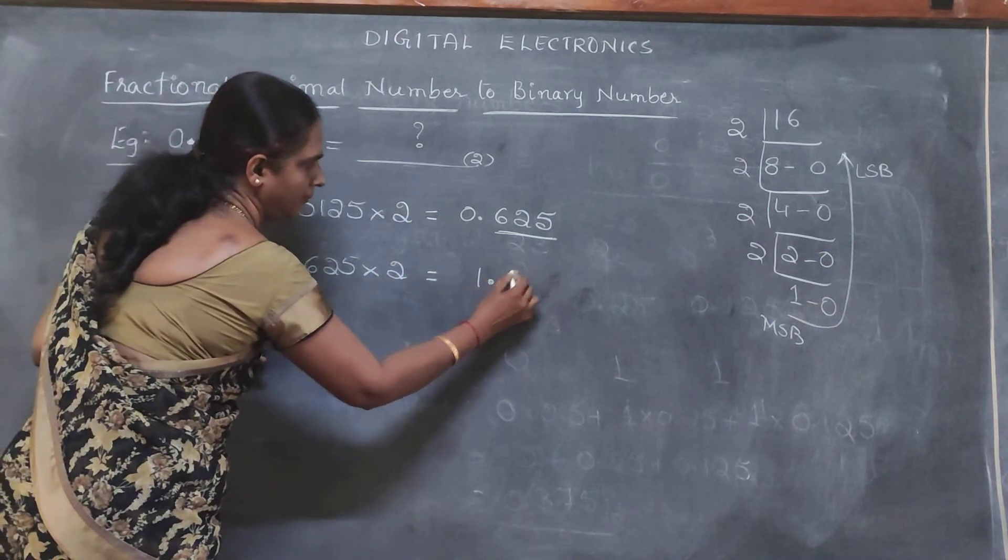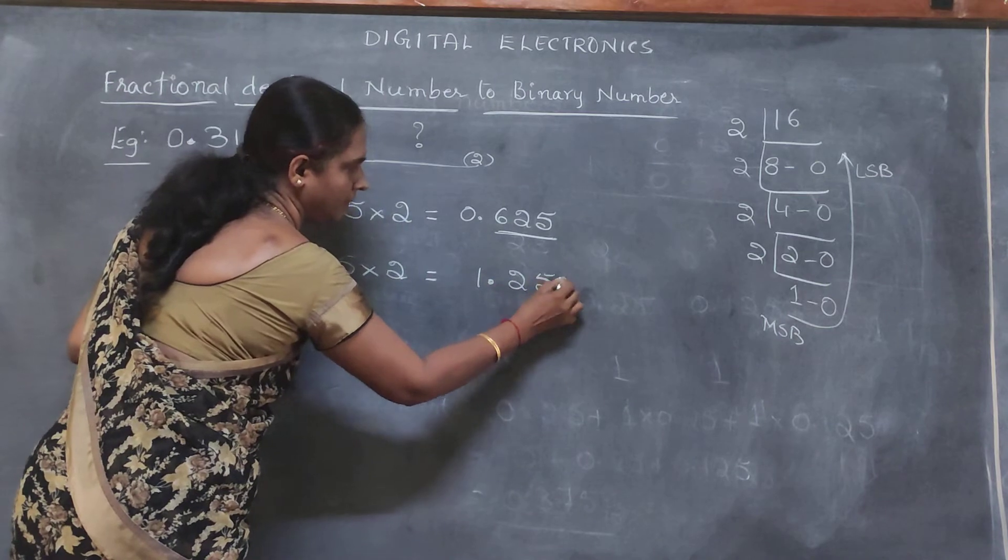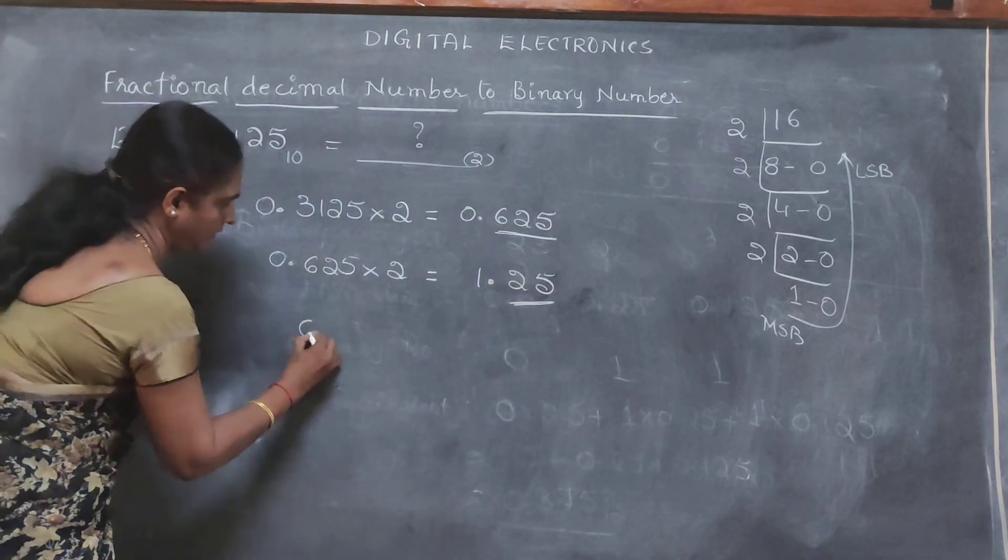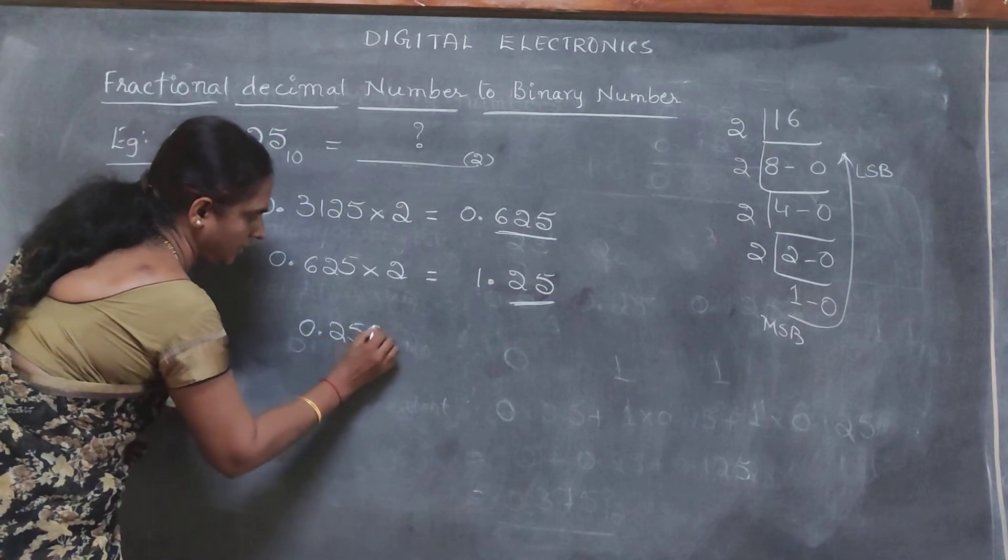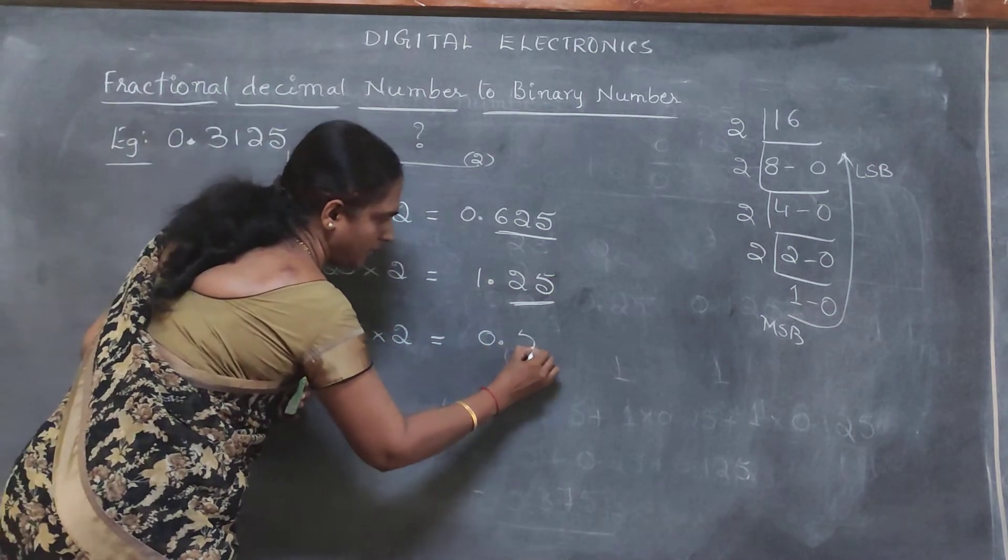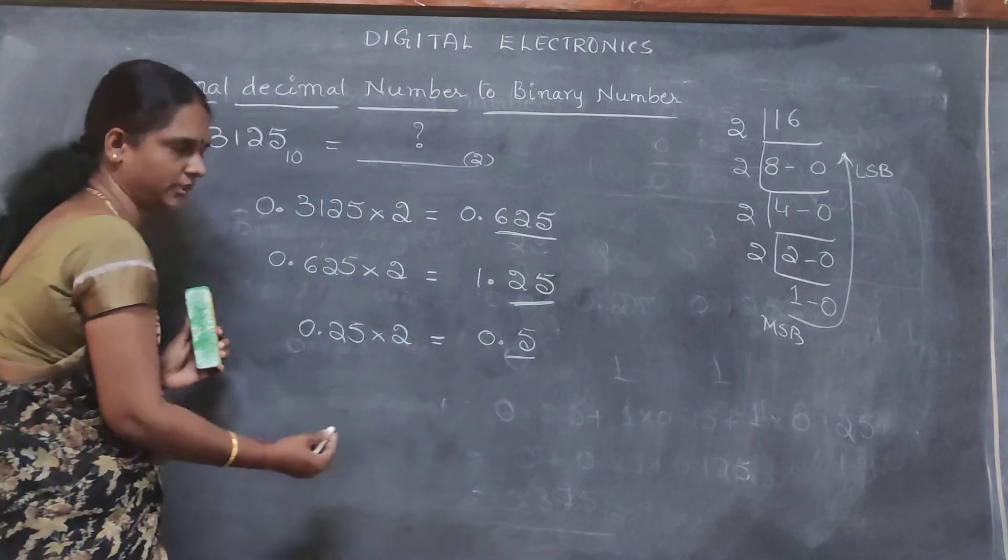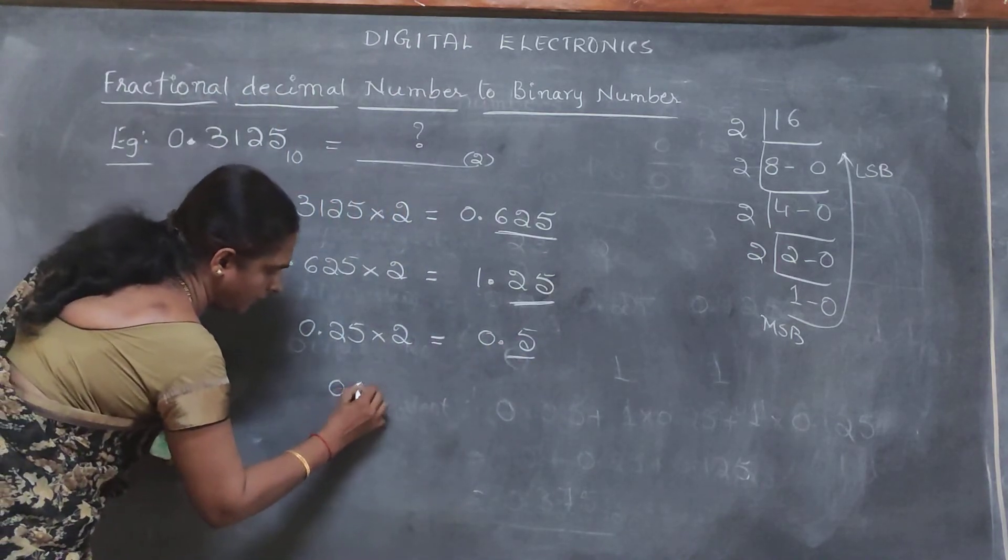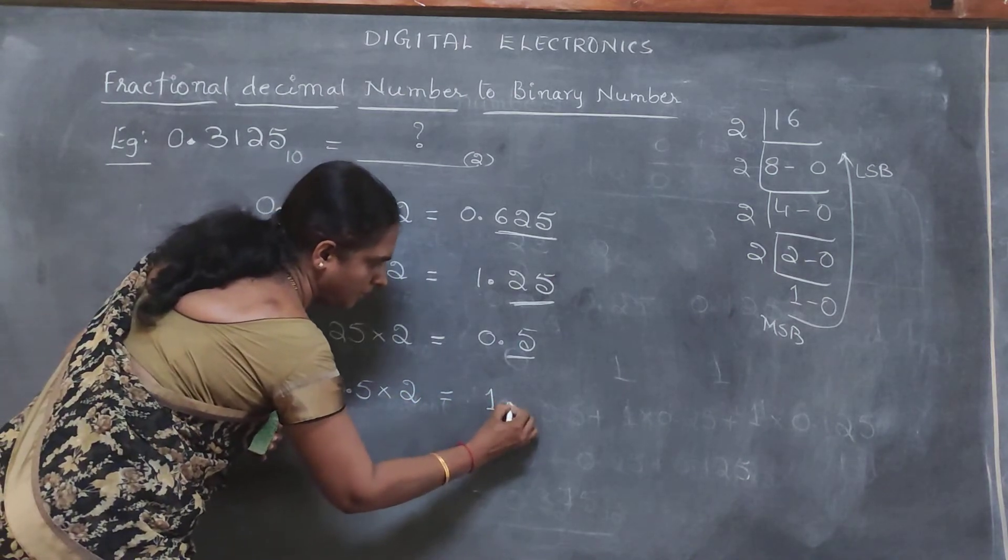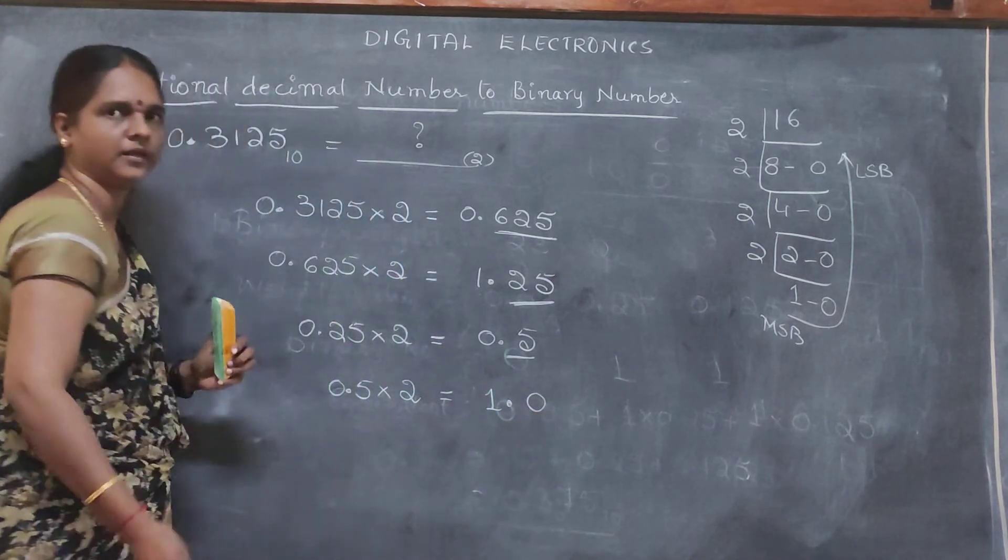Which is equal to 1.25. Leave this, consider only the fraction, 0.25 into 2, which is equal to 0.5. Consider only the fraction, so 0.5 into 2, which is equal to 1.0.